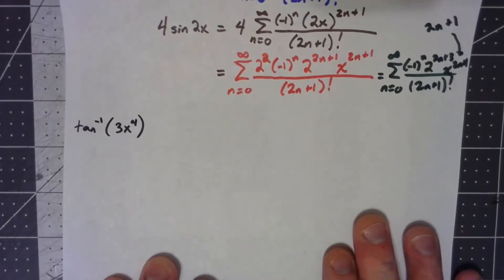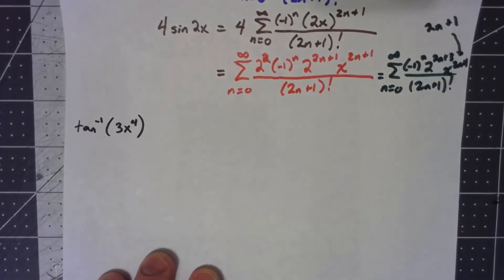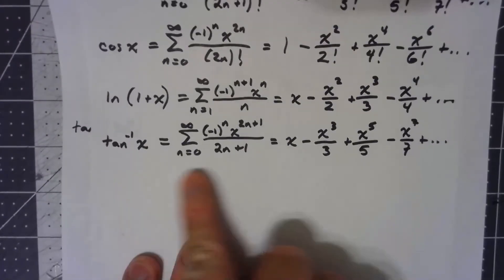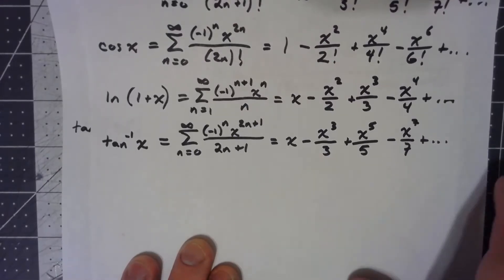What if I want a Taylor series for the inverse tangent of 3x to the 4th? We go to our commonly used Taylor series. Inverse tangent of x is this one right here.